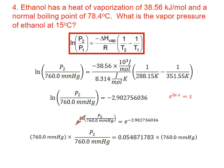If we multiply both sides by 760, we get rid of the denominator on the left, and we end up with a P2 value of 41.70255 millimeters of mercury. We round this to two significant figures to match the least number of significant figures in our measurements — 15 degrees Celsius — giving us 42 millimeters of mercury for the final answer.